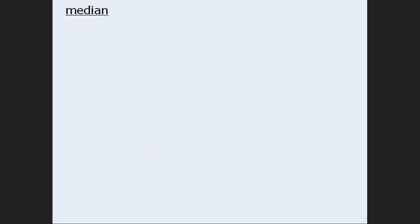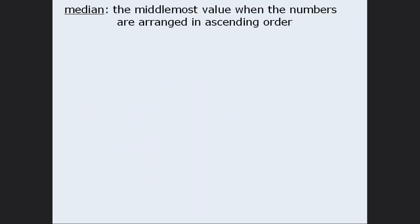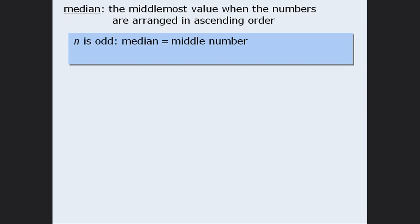Another way to describe a set of numbers is to use the median. The median is defined as the middlemost value of a set when the numbers in that set are arranged in ascending order. When determining the median, we need to consider two cases. When n, the number of values, is odd, then the median is the middle value once the numbers are arranged in ascending order.